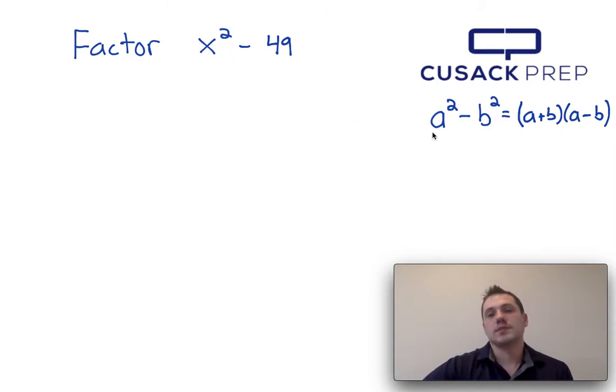x squared is the same as a squared, so that means a must be x. 49 is the same as b squared, so that means b must be 7.